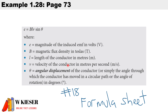The other formula we'll be using is formula number 18 from the formula sheet. The instantaneous value (small e) is equal to the magnetic flux in tesla, multiplied by the length in meters, multiplied by the velocity in meters per second, times sine theta — representing the angular displacement along the sinusoidal waveform.